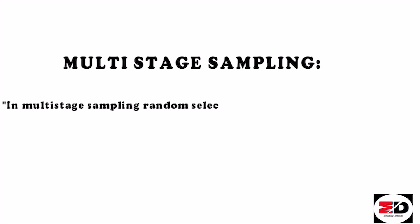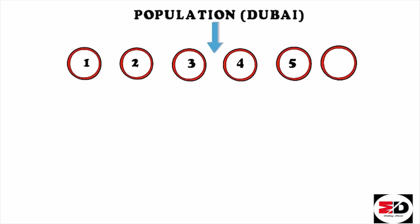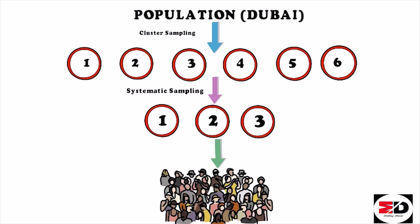Last but not least — multi-stage sampling. In multi-stage sampling, random selection is done at primary, intermediate, and final units from a given sample. In this sampling, we use more than one probability sampling technique. For example, we select provinces using cluster sampling, then select three districts from those using systematic random sampling, and then from those districts select 1000 individuals using simple random sampling. Using a different sampling technique at each selection stage is called multi-stage sampling.